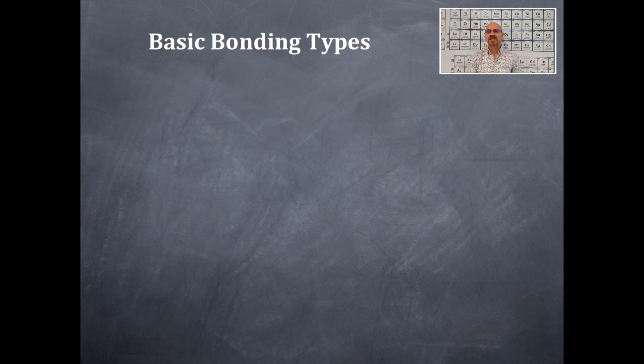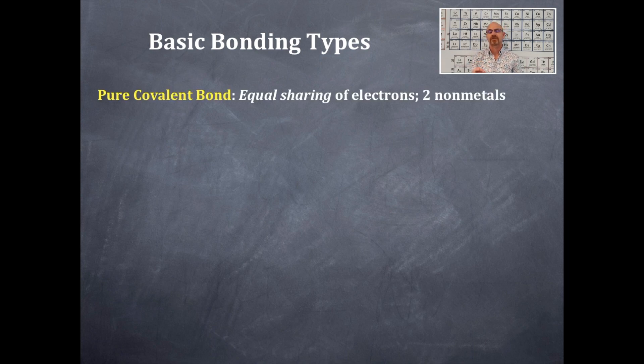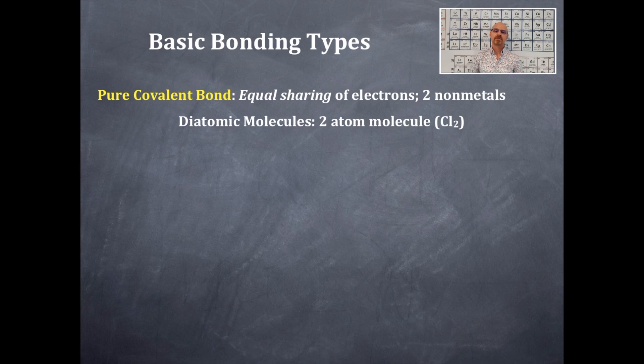BAM! So today we're going to be talking about basic bonding types. There's going to be three basic bonding types. The first one is a pure covalent bond. That is an equal sharing of electrons where there are two nonmetals. That would be an example of this would be a diatomic molecule - that's a two atom molecule - chlorine, fluorine, bromine, iodine, oxygen, nitrogen, and hydrogen. Those would all follow that same pattern, but there's chlorine for you. These are nonpolar because there's an equal sharing of electrons.